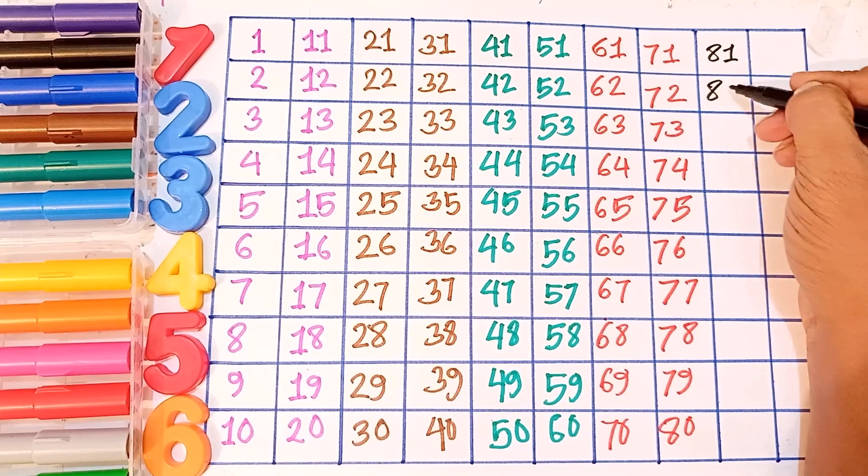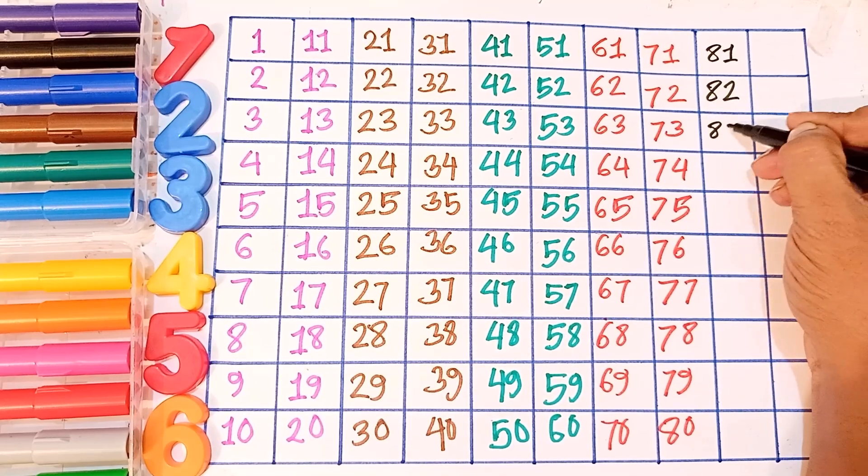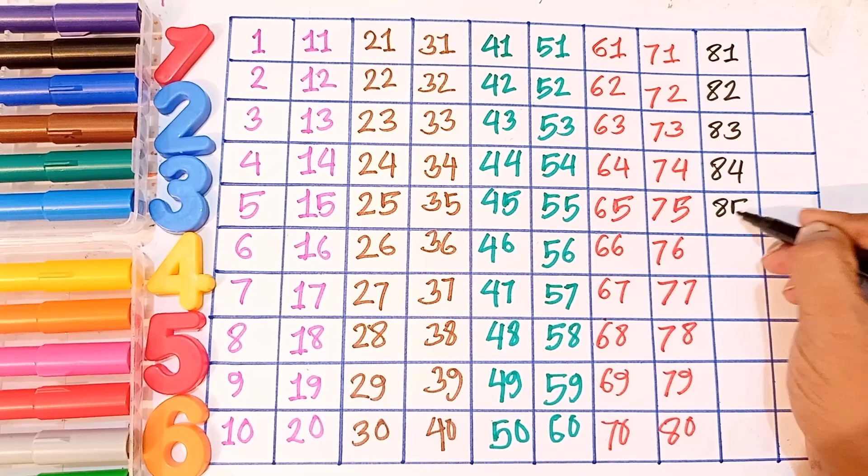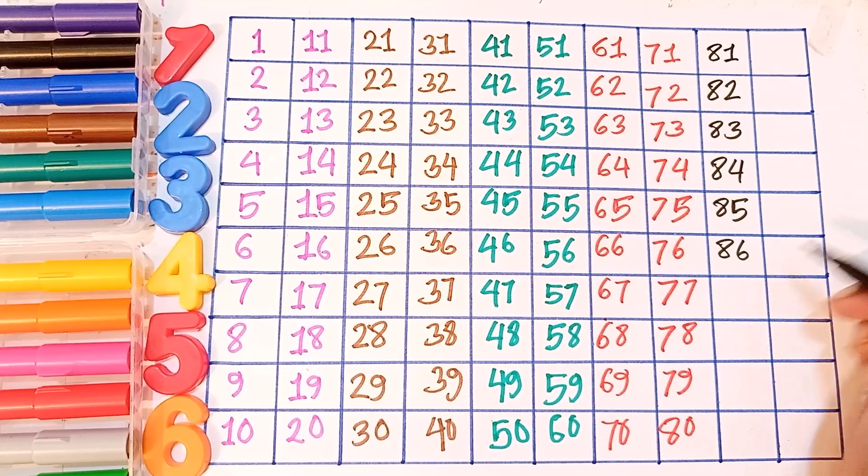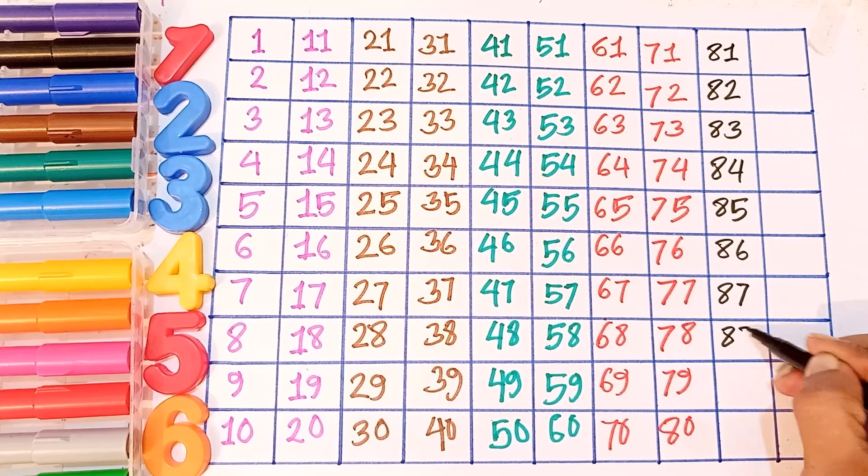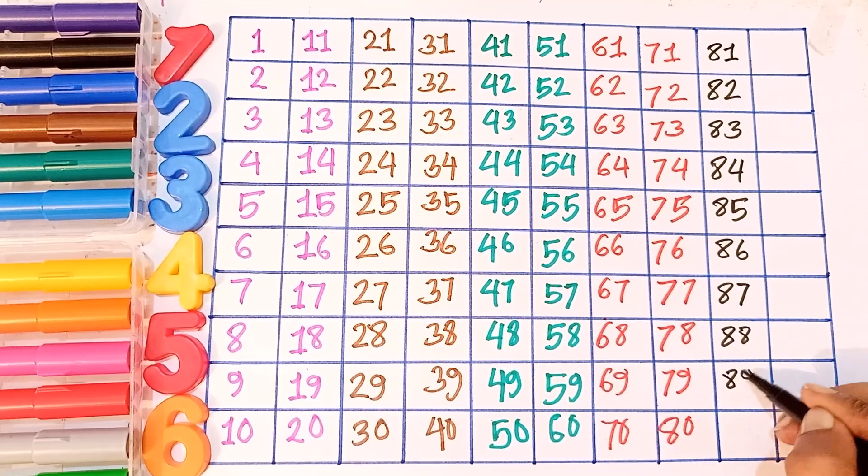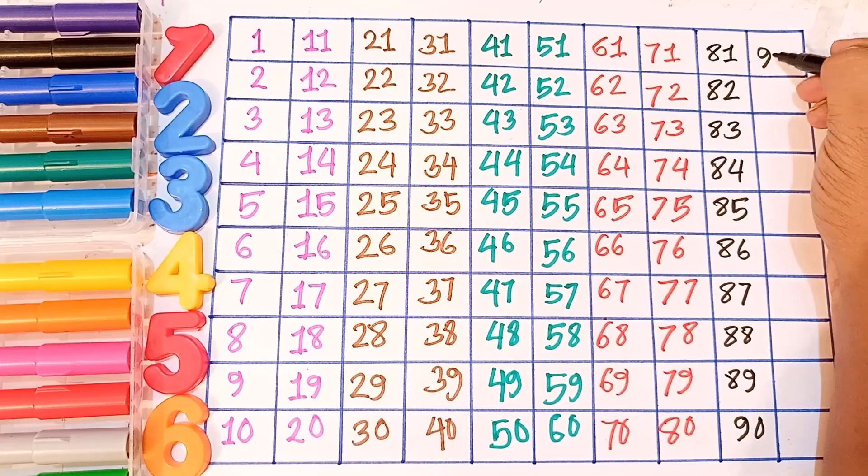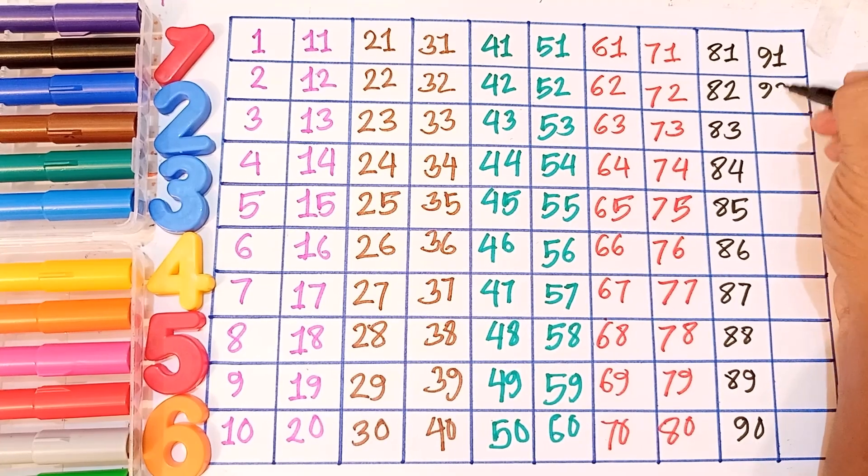Eighty-two, eighty-three, eighty-four, eighty-five, eighty-six, eighty-seven, eighty-eight, eighty-nine, ninety. Ninety-one, ninety-two.